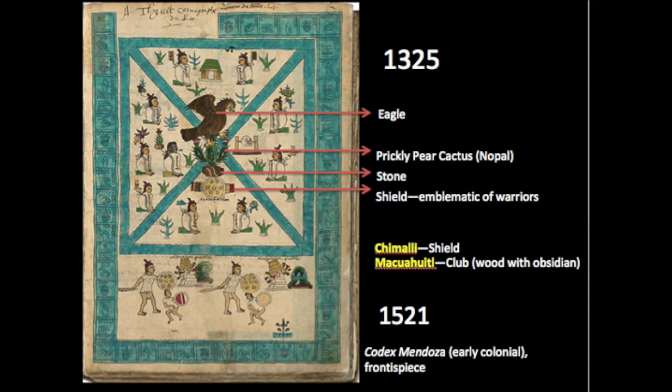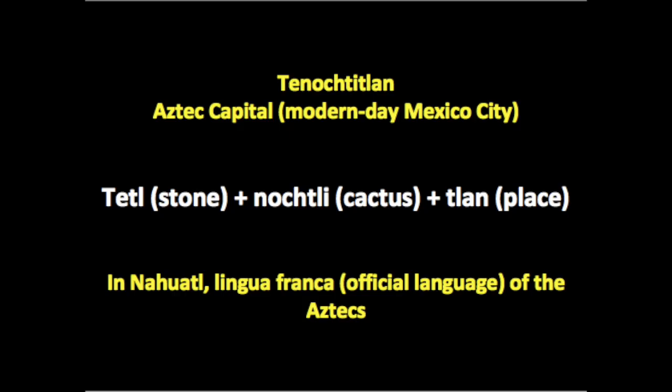Tenochtitlan is the Aztec capital, established where that vision appeared. That capital city is modern-day Mexico City. Tenochtitlan is composed of three Nahuatl words: 'tetl' meaning stone, 'nochtli' the cactus, and 'tlan' a suffix for place — so there you have it, Tenochtitlan.